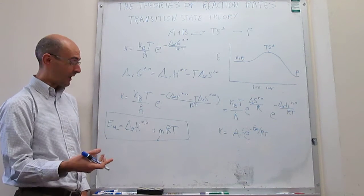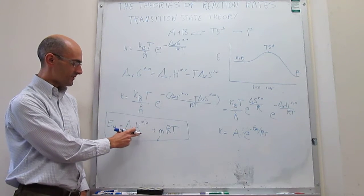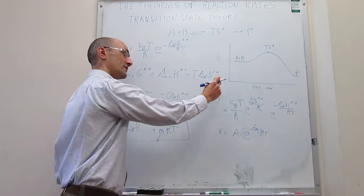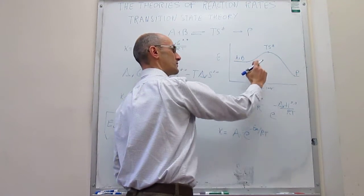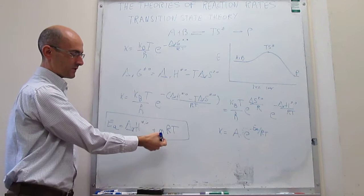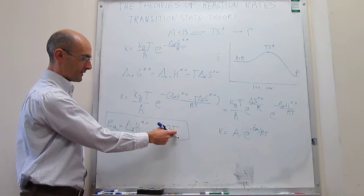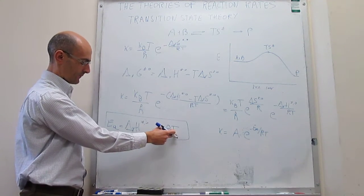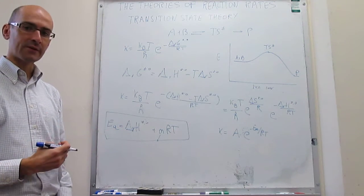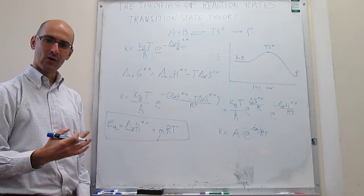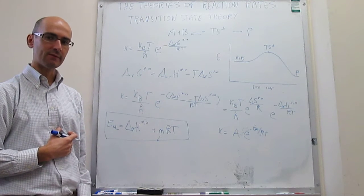This actually allows you to explain exactly what this activation energy is. The activation energy is simply the enthalpy change going from the reagents to the transition state, plus a small correction term, m times RT. This correction is usually very small and depends on temperature. This is the first very clear explanation of what the activation energy in the Arrhenius expression really is.